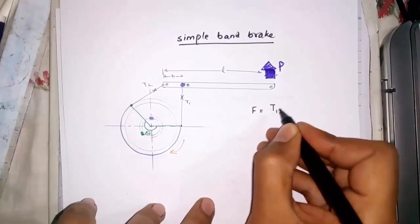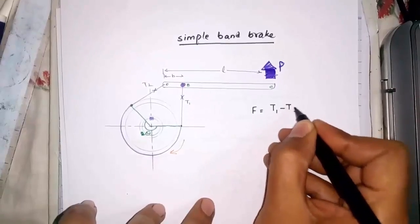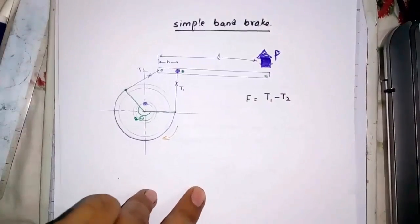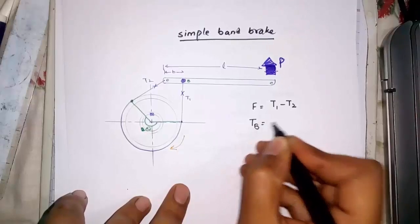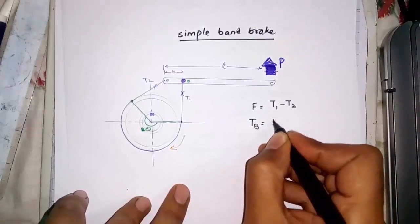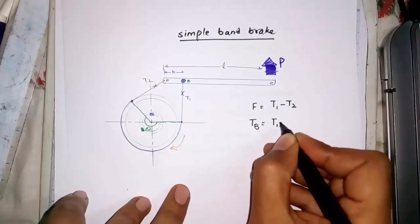In this brake, the braking force is equal to T1 minus T2. Tension in tight side minus tension in slack side. And braking torque is equal to the braking force into radius of the pulley or wheel or whatever you have in your case.